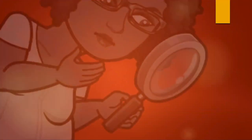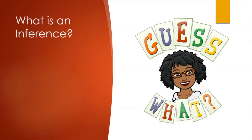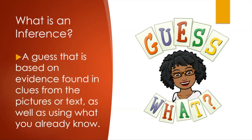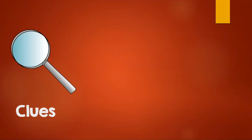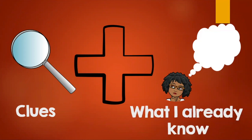Now, I know you're wondering, what is an inference? Well, let me tell you. I bet you make inferences all the time and don't even know it. An inference is a guess that is based on evidence found in clues from the pictures or text, as well as using what you already know in your big, beautiful brain. So remember, look for those clues in pictures and in text when you're reading, and then add that to what you already know in your head, and you're going to make a guess or an inference.